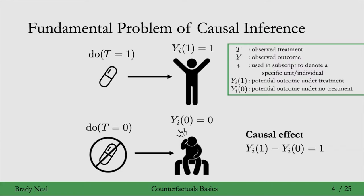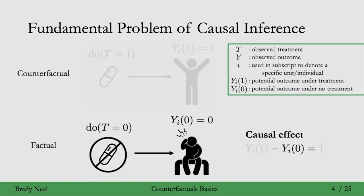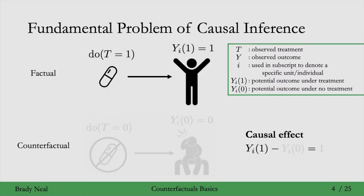In this example, y0 is 0 and y1 is 1. In other words, if you take the pill your headache goes away, and if you don't take the pill you still have a headache. That's how we define the unit-level or individual-level causal effect, which in this example would be 1. However, the fundamental problem is that you can either take the pill or not take the pill. The outcome you observe is the factual, and the other potential outcome — the one you don't observe — is the counterfactual. We can't observe the unit-level causal effect because we can't observe both potential outcomes.